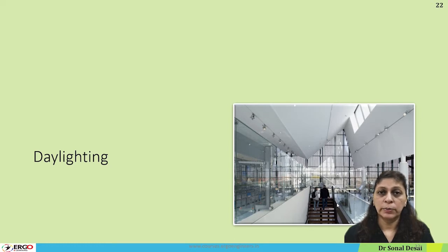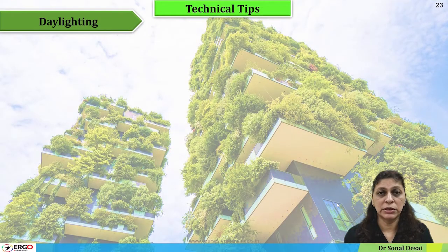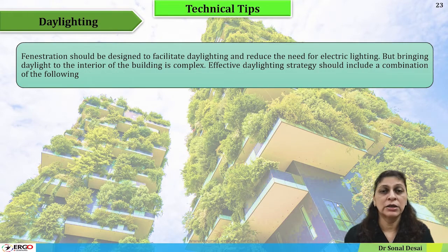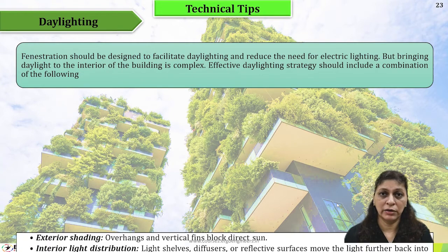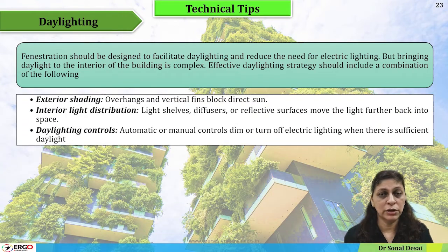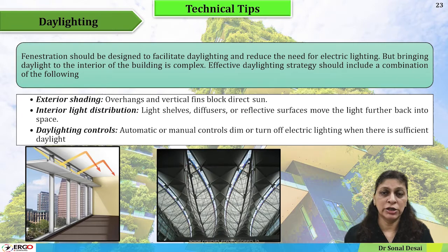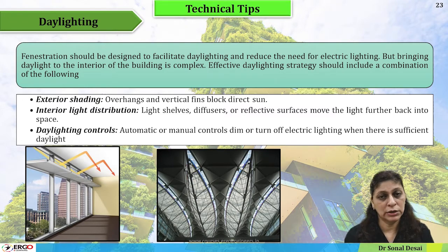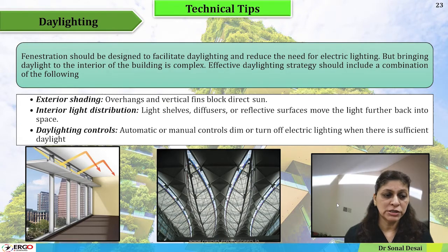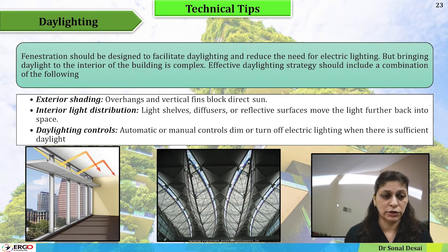Skylights also play a very important role in daylighting. The next topic is daylighting — how to enhance daylighting so that building performance can be maximized and occupants in the perimeter zone can have a better working environment. At the same time, daylighting should not result in glare and excessive solar heat load. Different options for exterior shading, interior light distribution, and controls are also part of this video series.